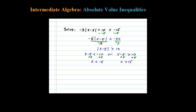Let's graph these on a number line. All the numbers less than negative 5 — I'm going to use an open dot, that's non-inclusive — shading everything to the left. Then all the numbers greater than 15 should also solve the inequality, so I'm going to shade everything to the right of 15.